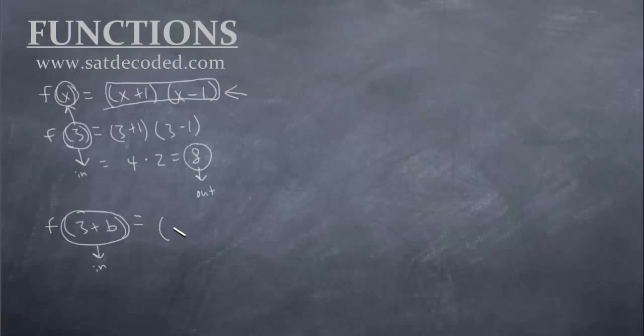So again, our inputs go where our x's used to be. So it used to be x plus 1, now it's going to be 3 plus b plus 1. And then this side is going to be 3 plus b and then minus 1. So let's just simplify that. Well, the 3 plus 1 is 4, so this side becomes 4 plus b.